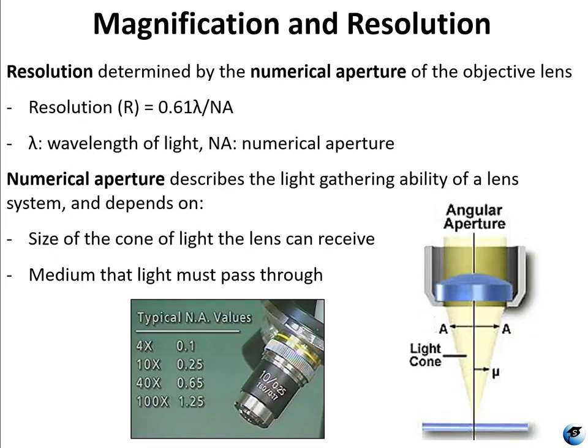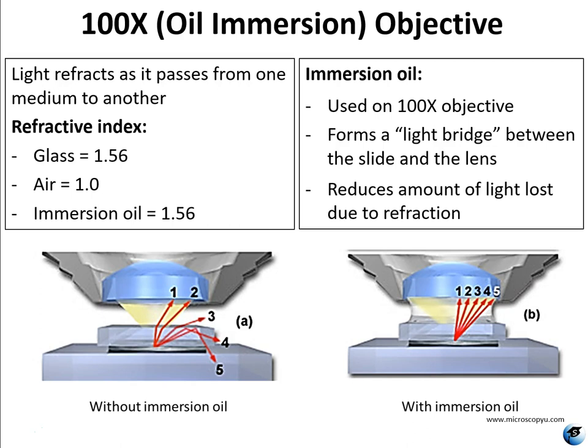Resolution is determined by the numerical aperture of the objective lens — a measure of the cone of light that can be gathered by the objective lens. Using immersion oil can change the numerical aperture, decrease the light that's diffracted, and therefore increase the light gathered by the objective. The numerical aperture depends on the size of the cone of light the lens can receive and the medium that the light is passing through. When using the 100x objective, and only then, you're going to be using immersion oil.